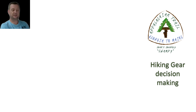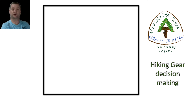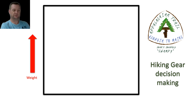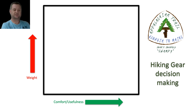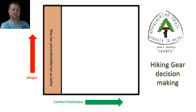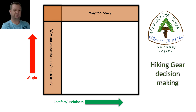So when I'm looking at what to take, firstly I can plot a graph. Generally when deciding what to buy, we want to choose gear that's as light as possible, or that's useful or comfortable. Anything down this end of the graph is just way too uncomfortable or not very useful at all, so we try to avoid stuff in that area.